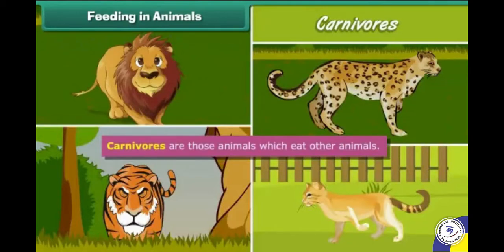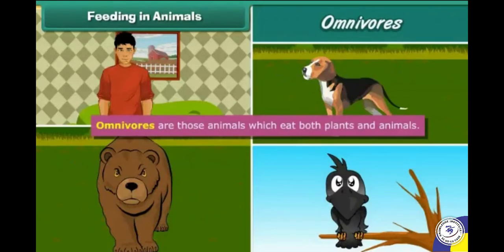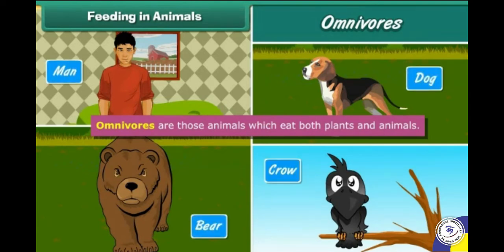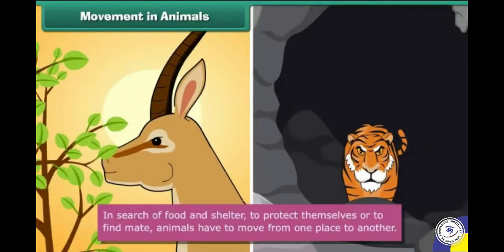Carnivorous are those animals which eat other animals. Examples include lion, tiger, cheetah, and cat. Omnivorous are those animals which eat both plants and animals. Examples include man, bears, dog, and crow.